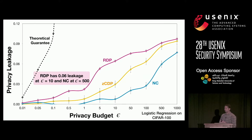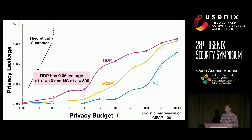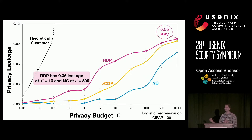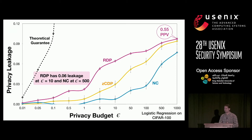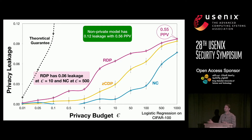Here are the privacy leakage results for logistic regression on CIFAR-100. We see the same trend: RDP, since it adds the least noise, tends to increase privacy leakage. For epsilon value of 10, RDP has a leakage of 0.06, which doesn't seem too high; at this point, accuracy loss was 0.1. We also measured the positive predictive value (PPV)—of all the membership predictions made by the adversary, what fraction were truly correct members. A base rate of 0.5 PPV would mean completely random guessing. Even at epsilon 1000, the PPV is 0.55, but the non-private model has a PPV of 0.56, meaning even non-private models are private enough in this task.